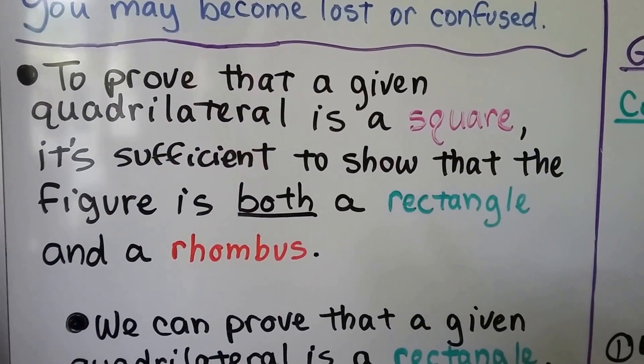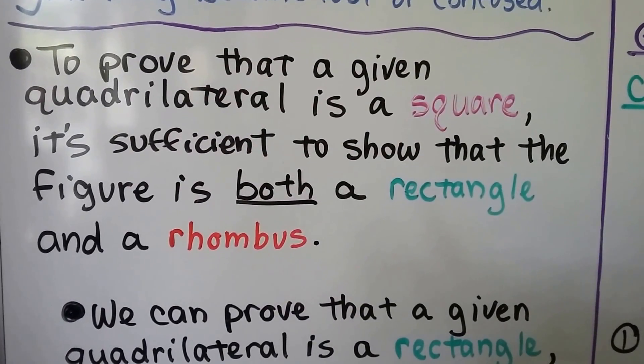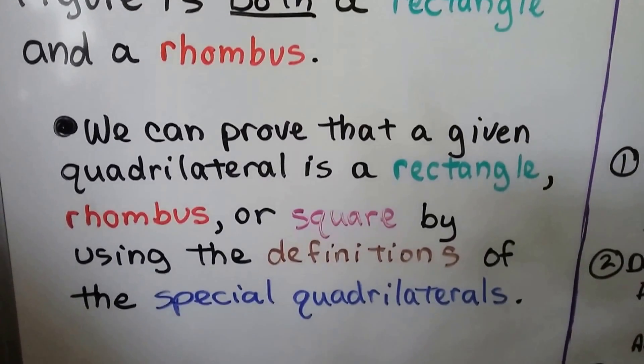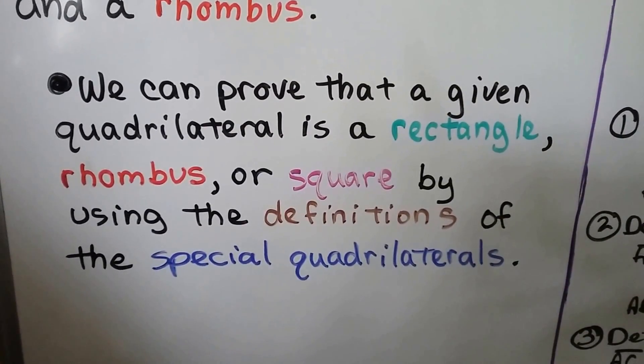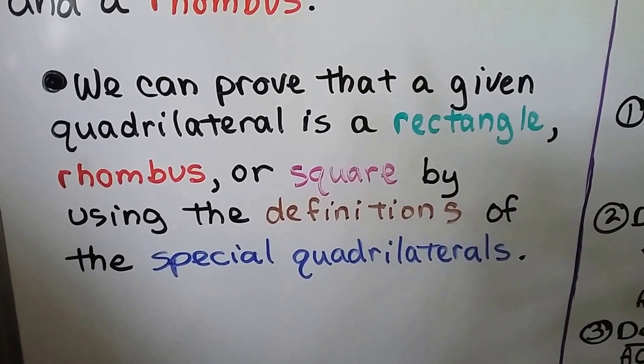To prove that a given quadrilateral is a square, it's sufficient to show that the figure is both a rectangle and a rhombus. We can prove that a given quadrilateral is a rectangle, rhombus, or square by using the definitions of the special quadrilaterals.